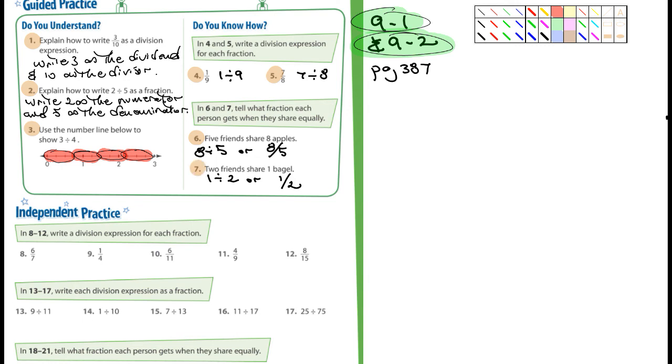And I've already done these for you, really. So I'm looking at number 1. It says, explain how to write 3 tenths, 3 over 10 as the division expression. So you'd write 3 as the dividend, and 10 as the divisor. Number 2, it says, explain how to write 2 divided by 5 as a fraction. Write 2 as the numerator, and 5 as the denominator. And then it says, do the number line below to show 3 divided by 4. All I did is divide it up into sections of 3 fourths, 3 divided by 4. And you can see each one there. You guys can just copy these down.